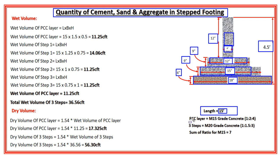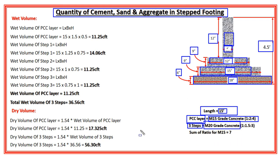For the PCC layer I am using M15 grade of concrete, and for the remaining three steps I am using M20 grade of concrete. So this is a brief description of the stepped footing. Now let's start calculating the quantity of cement, sand and aggregate. To do that, I first have to find out the wet volume of concrete for this particular stepped footing.